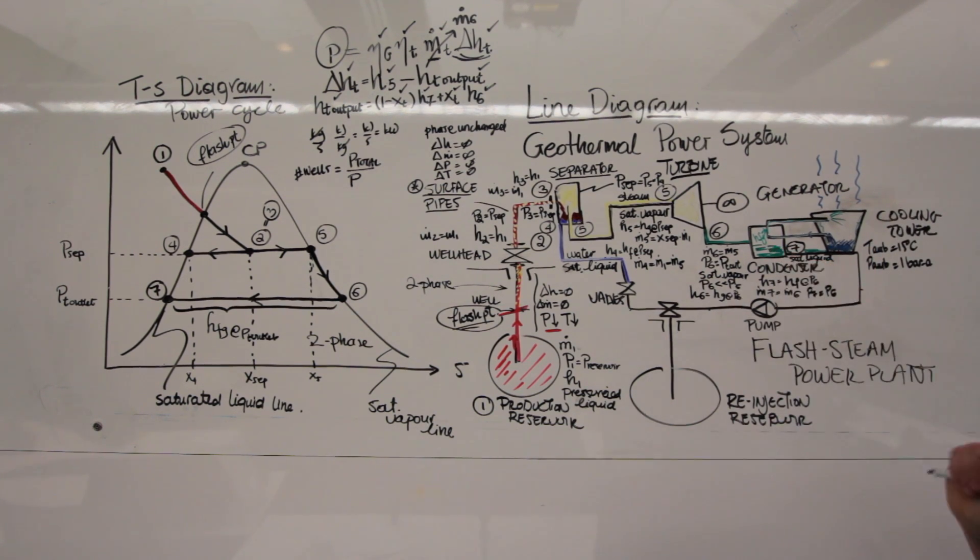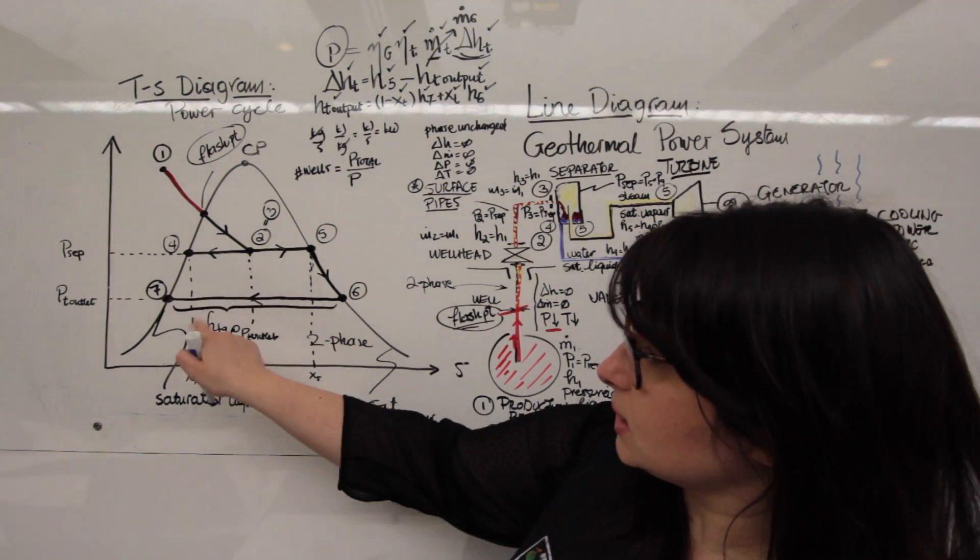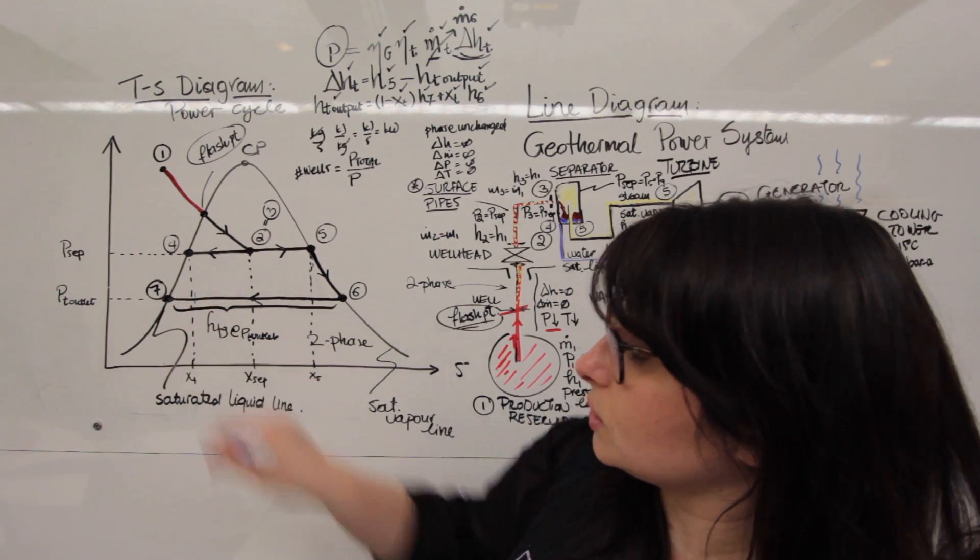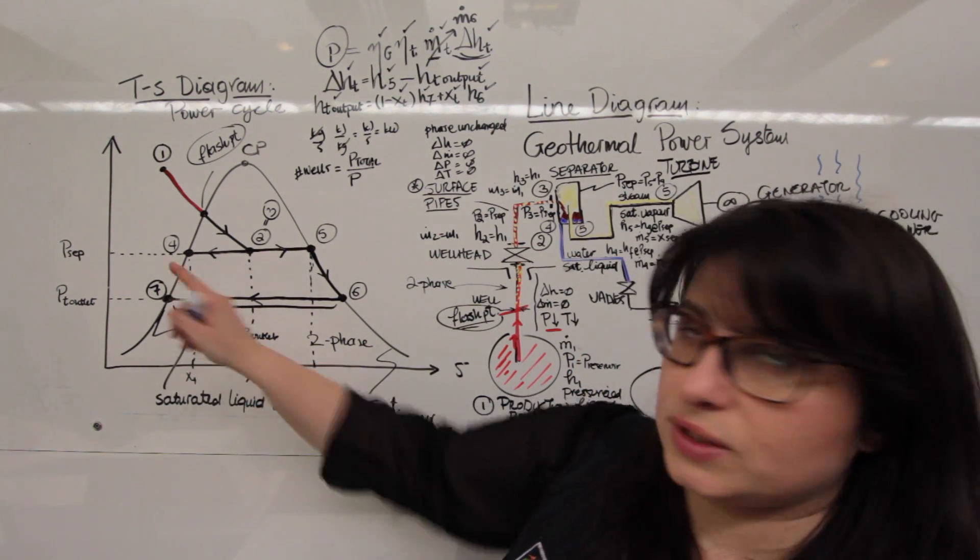This is important because it is imperative that we take HFG out of the steam to condense it, else if you don't get the entire amount, say you'll go from 6 somewhere here, well, you're going to get 2 phase fluid, right?